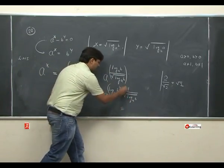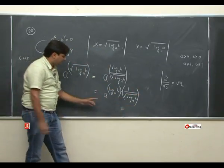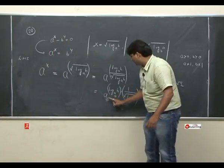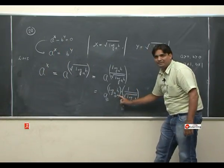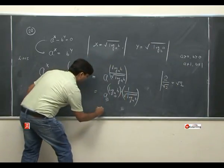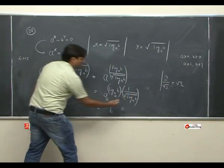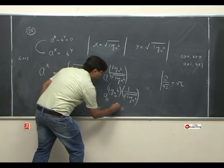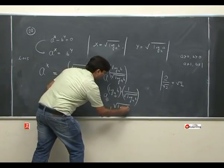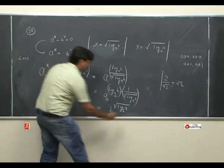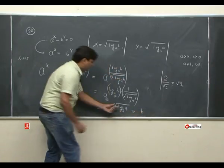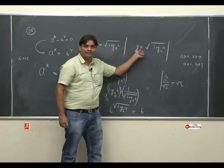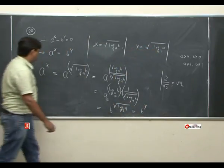log B base A को arrange करो: log B base A = 1 upon log A base B (change of base). तो exponent बनेगा: (log B base A) upon √(log B base A) = √(log B base A). ये भी A है और ये भी A है — जब दोनों base same हों तो बचेगा: B. B नीचे आ जाएगा। log का denominator से numerator में जाने पर: log A base B. तो B की power √(log A base B) = B^Y. Hence proved.